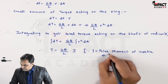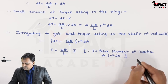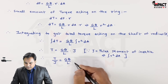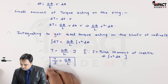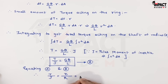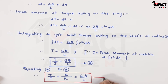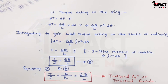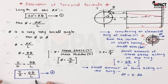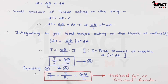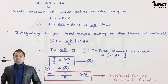By definition, J = integral of r²·dA. Rearranging the terms, T / J = G·theta / L, which is Equation B. Equating Equation A and Equation B, the final torsional equation is: T/J = tau/R = G·theta/L. This is called the torsional equation or torsional formula, which will be used throughout the chapter on torsion.